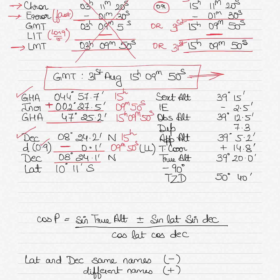The sextant altitude given is 39 degrees 15 minutes. The index error is 2.5 minutes on the arc, so it is subtracted from the sextant altitude. If it were off the arc it would be added, but since it is on the arc we subtract it, giving an observed altitude of 39 degrees 12.5 minutes.